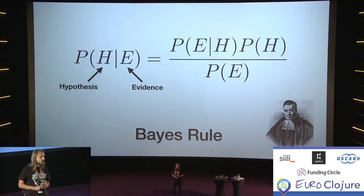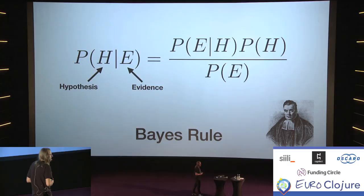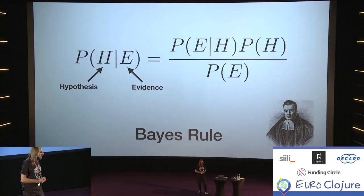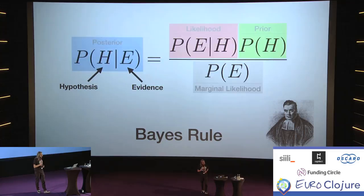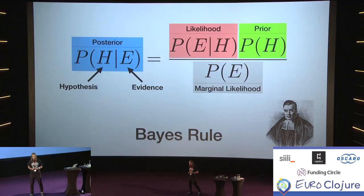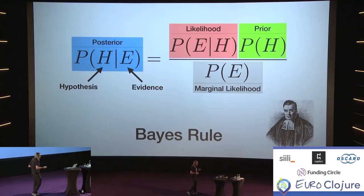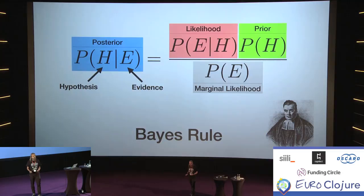All the P's in Bayes' rule are probabilities — functions of up to two parameters, H and E. H is the hypothesis — for example, a coin is fair or not fair. E is the evidence: the data and observations you made, such as the number of coin tosses and how often the coin showed heads. On the left-hand side is the posterior — that's what we're usually interested in: the probability that your hypothesis is true given the evidence. On the right, we start with the prior: your belief before you observe any data — what do you believe the probability of your hypothesis being true is?